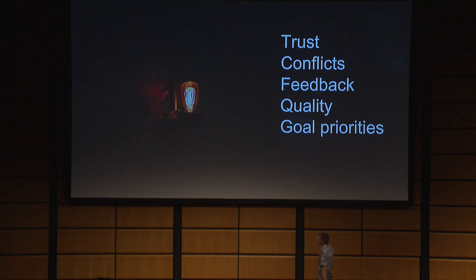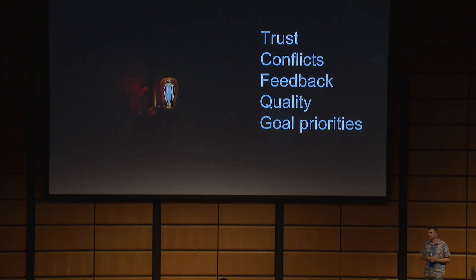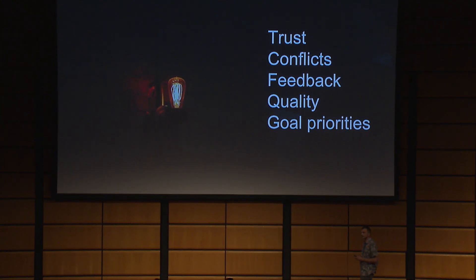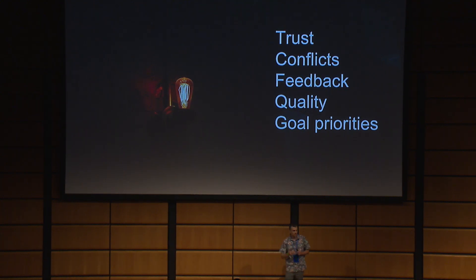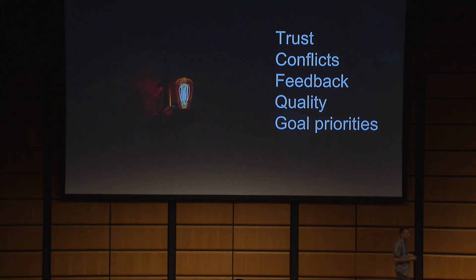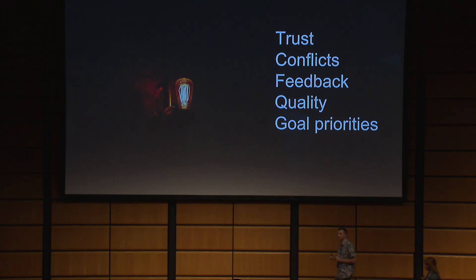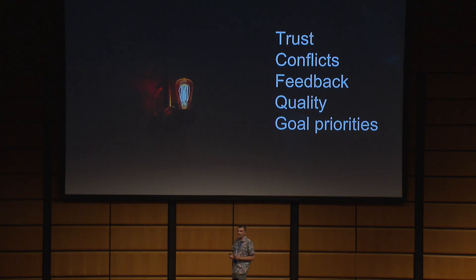Between team members in a cohesive team, there is trust. What does trust mean in very simple words? Trust means that I can predict the reaction of another person in a specific situation. For example, I can predict that when I do something wrong, this person will tell me or help me. Or if I ask for help, I will get that help.